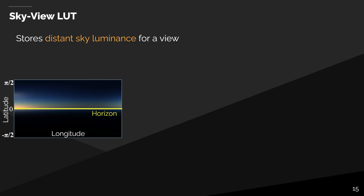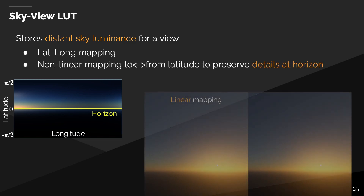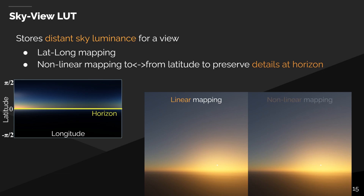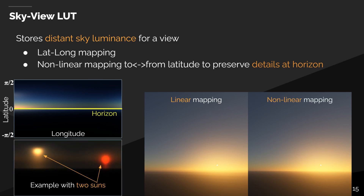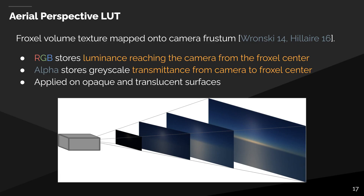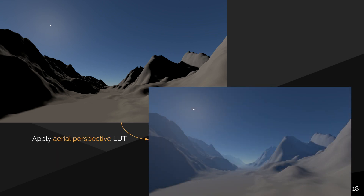The SkyView LUT is the new lookup table we propose to render the distant sky. It stores the ray-marching result using a latitude-longitude mapping, and the latitude mapping is non-linear in order to maintain the high-frequency colors at the horizon while reducing linear interpolation artifacts. The lookup table can also store the contribution of any number of suns at once. We can now render the distant sky with the sun disk composited at this stage. The aerial perspective lookup table stores luminance and transmittance, evaluated and stored in a volume texture mapped onto the camera frustum — this can be applied on opaque and transparent surfaces.